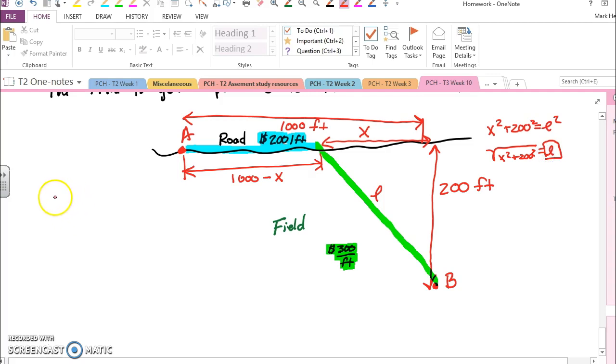So this is a length and that length times $300 per foot plus the other length, 1000 minus x, times only $200 per foot can be used to calculate cost.